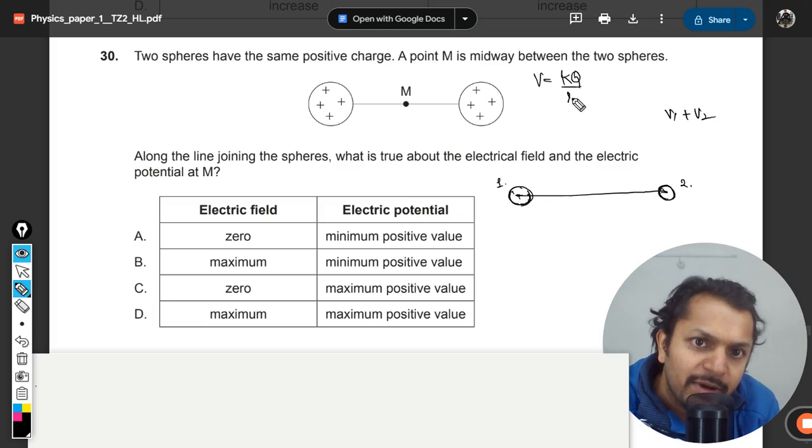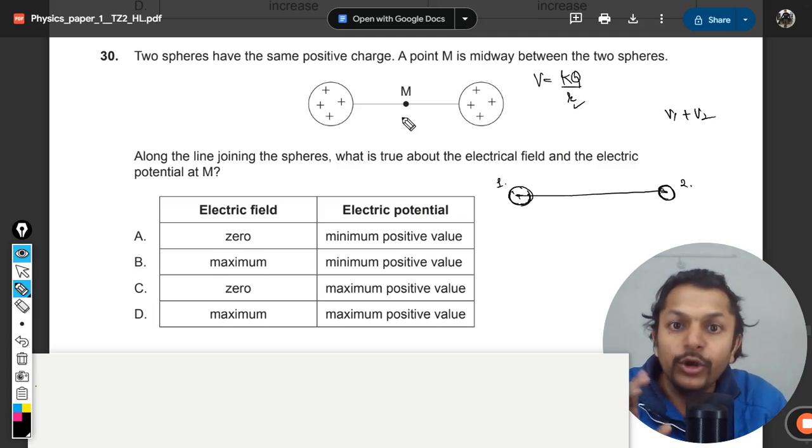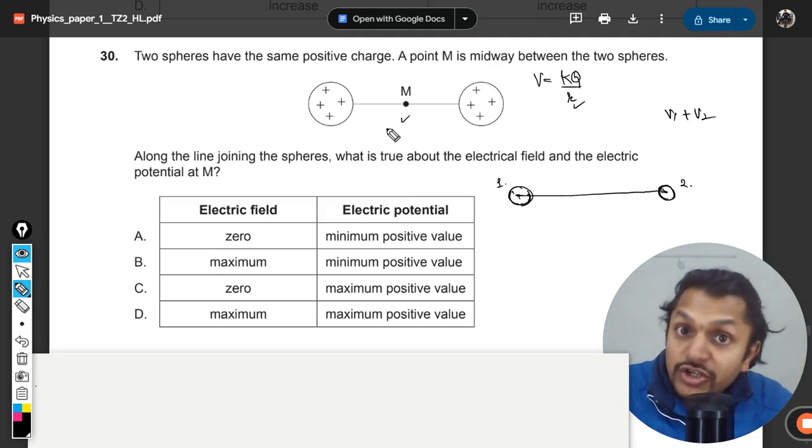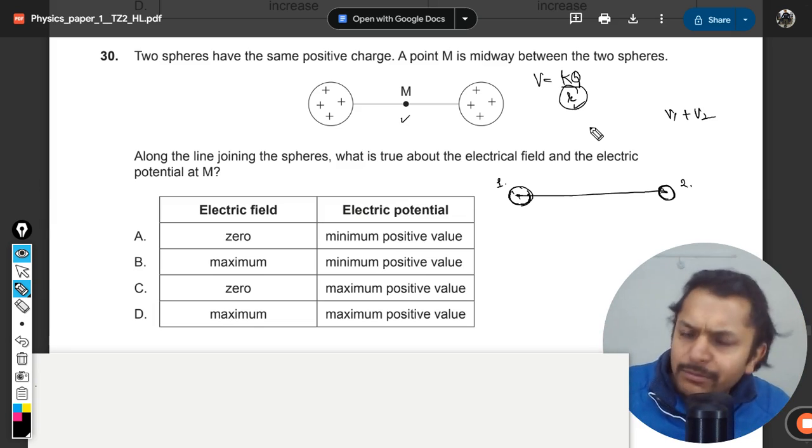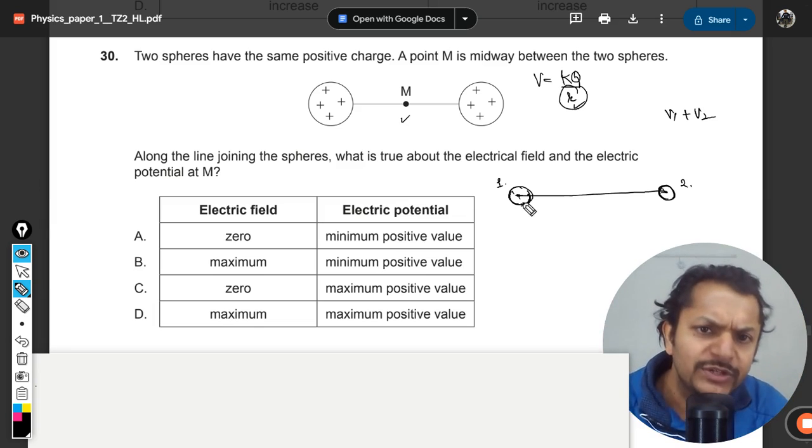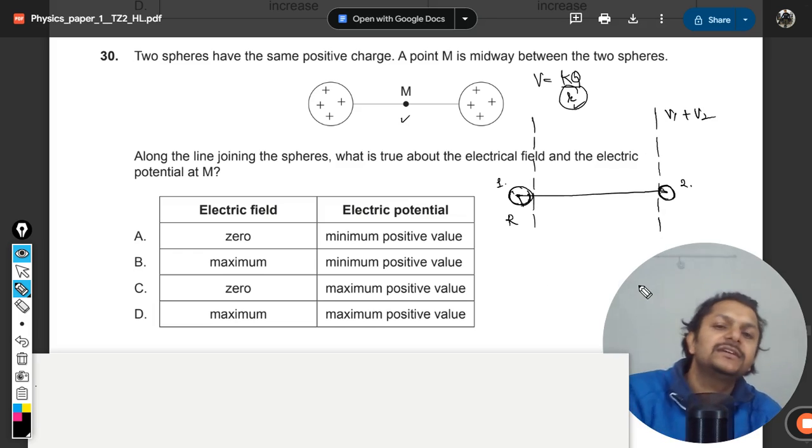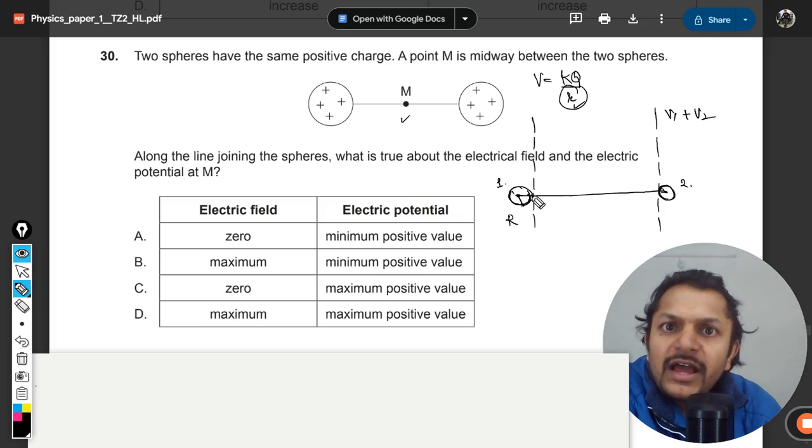But what's happening is the formula for potential is kQ divided by r. Lesser is the r, the distance between the center of the sphere and point M, lesser the distance, more becomes the potential. So much so that if r tends to zero, the potential will become infinite. But that's definitely not the case—r cannot be zero. At the end of the day, this r will equal the radius. The potential will be maximum here at the surface, and after that the potential will be reducing.